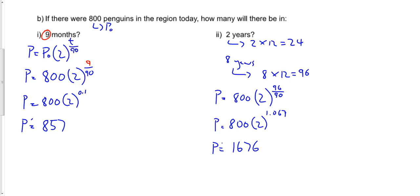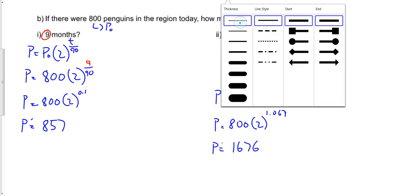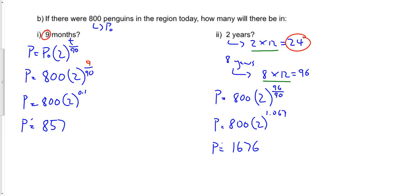So again, you're just substituting in the information that you've got. And again, really key is that you always do your conversion. You have to have the same time value or the same unit of time for both your doubling time and your actual value.